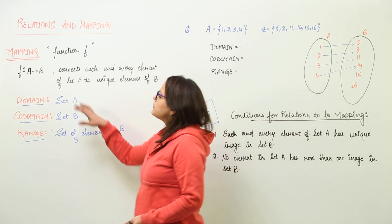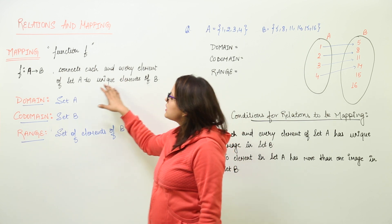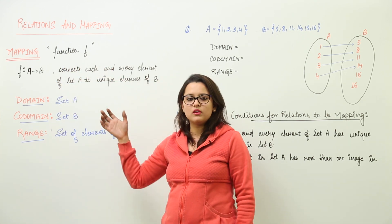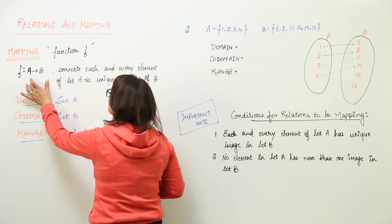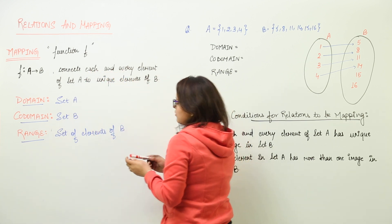Mapping is nothing but a function f. This function is going to be a relation kind of a thing between set A and set B such that it connects each and every element of set A.